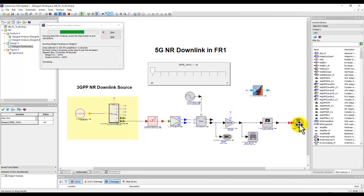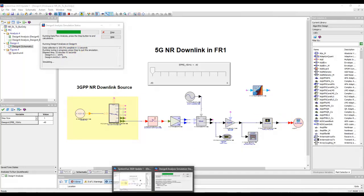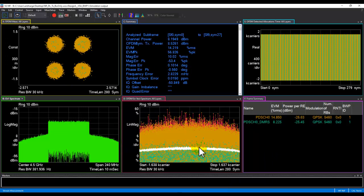So, SystemVue is sending the data to VSS software. And once we switch to VSS software, we can see the demodulated spectrum. Also, the constellation error in each carrier, as well as the quick snapshot of all the key figure of merits.